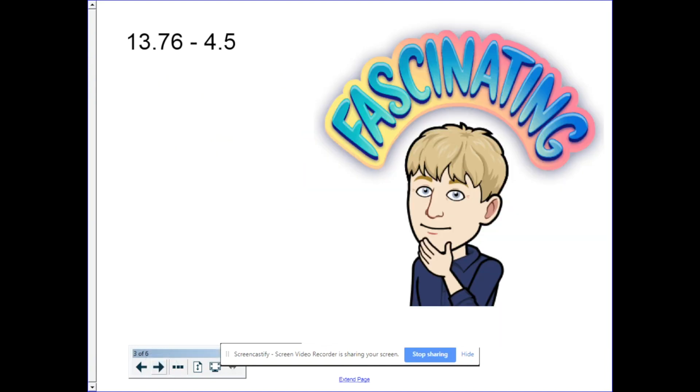What about subtraction? Works the exact same way. 13.76 minus 4.5. Well, what do we need to do next? That's right. Fill in that gap. So there's a 6 here. I need to put a zero underneath it. So I have the same number of decimal place values in both numbers. 6 minus 0 is 6. 7 minus 5 is 2.